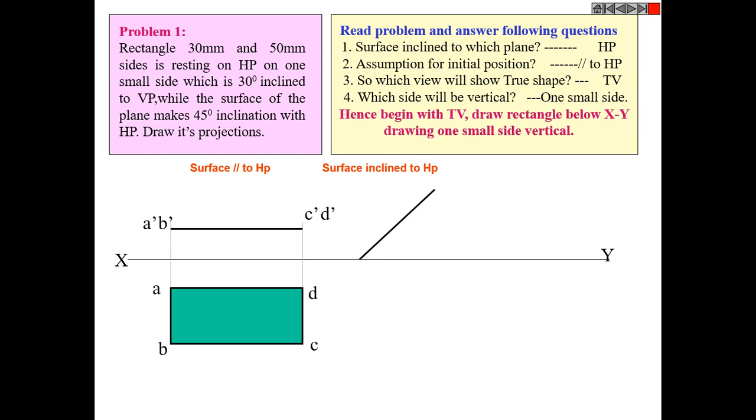Next, on HP one side is resting, so a' b' should be on XY line. Take a 45 degree inclination, the length of front view 45 degrees inclination to HP. Next, take a projection vertical and horizontal.